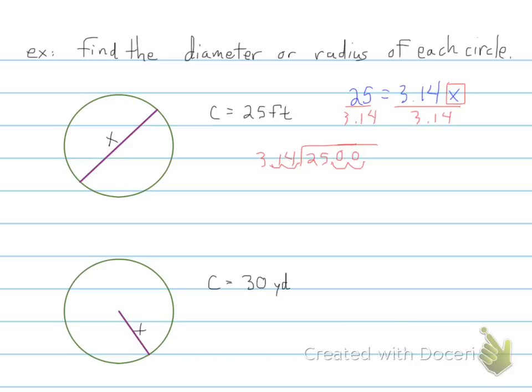So we have zero there, zero there, zero there. Bring our decimal over here. How many times does 3.14 go into 2,500? And I'm going to estimate we'll say eight times. So we're going to multiply over here.